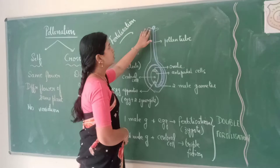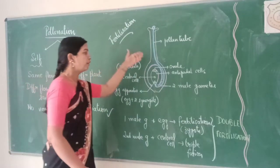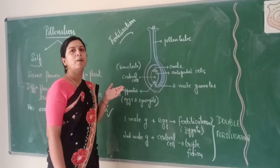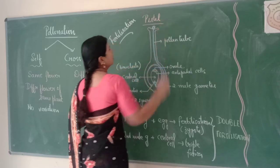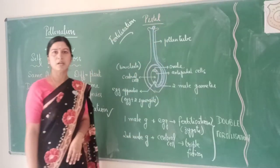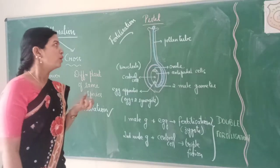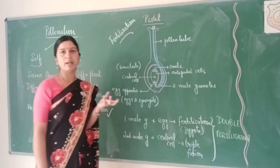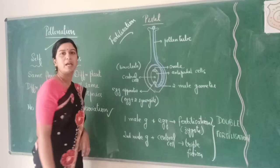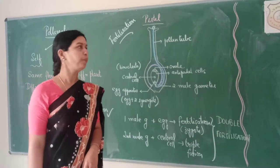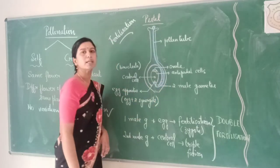Let us see how fertilization occurs in the flower of a plant. I have just drawn a single pollen grain to explain, though there might be hundreds of grains which can fall on the stigma. The topmost part of the pistil is the stigma, and it contains a sticky substance. As soon as pollen grains fall on it, some get stuck. After a few days, a tube-like structure emerges from the pollen grain, called the pollen tube. This pollen tube crosses the style and then reaches the ovary, entering inside the ovule.